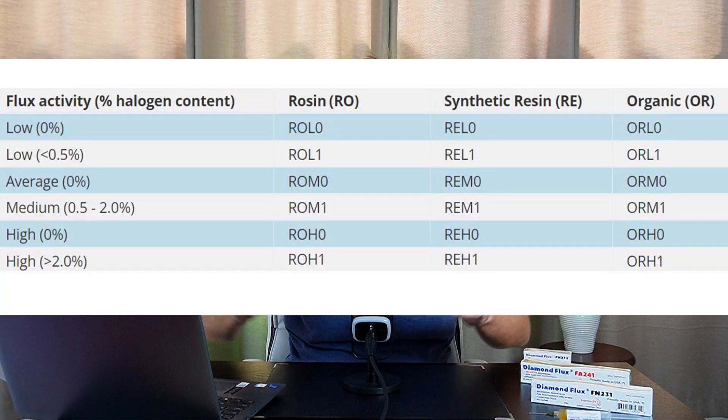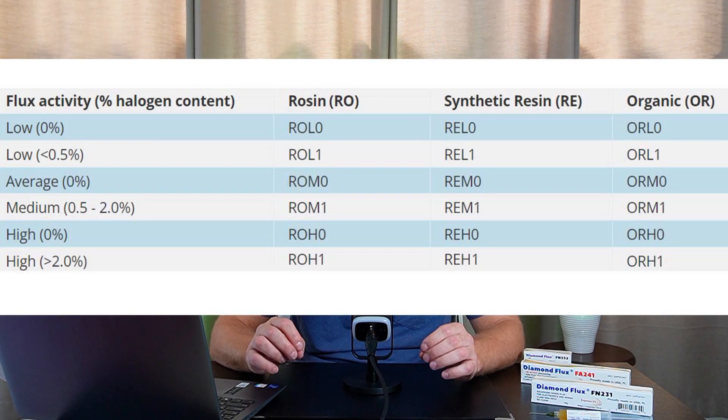If the third letter is M or H, the flux must be fully washed out from under the components, or oxidation can occur. Always use quality soldering fluxes with a clear classification. Don't use strange, no-name, cheap Chinese soldering fluxes or soldering pastes — you might ruin your work, and future repairs will cost much more than buying quality soldering flux.